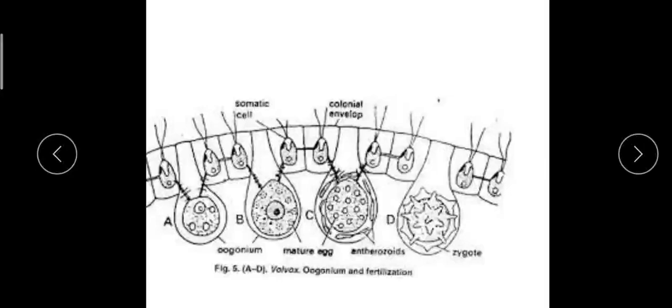As soon as fertilization is complete, the zygote secretes a thick three-layered wall, which may be smooth or spiny in nature. It then becomes an oospore or zygospore. The three layers of the zygospore from outside are: exospore, middle mesospore, and inner endospore.